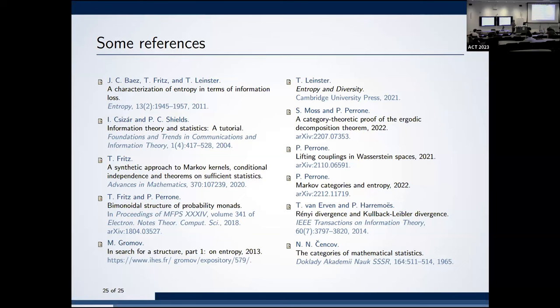Question: is there anything you can add that would tie things down to just the KL divergence? There is a paper — I believe by Janastobius, Fritz, and Tom Leinster — giving a perfect categorical characterization of relative entropy. That is quite different from our framework. I believe their argument can be recycled and cast into this notation, but I haven't done it, so I can't say for now.